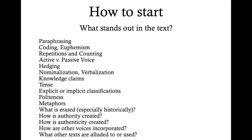We can also look for nominalization and verbalization — phenomena where something that is not a noun is turned into a noun, usually with a suffix, or something that is not a verb is turned into a verb. Also knowledge claims can be important — how is the speaker or writer demonstrating the knowledge they have? Tense can be important — past, present, future and all the other tenses we have might indicate something about the information.